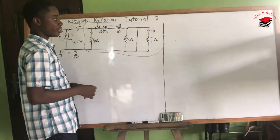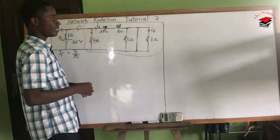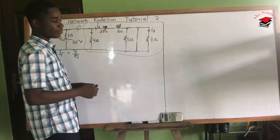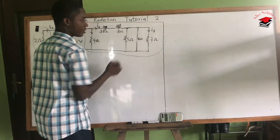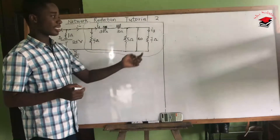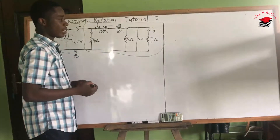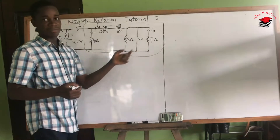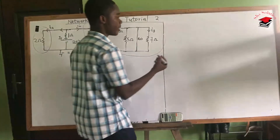When current gets to this junction through these three branches, the one in the middle has no resistance — that is called a short circuit. A short circuit is a branch with theoretically zero resistance. We say the resistance of a short circuit is zero. So when current gets here, our question is: will the current split among these three branches, or will it all go one way?